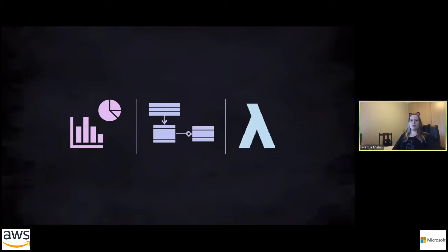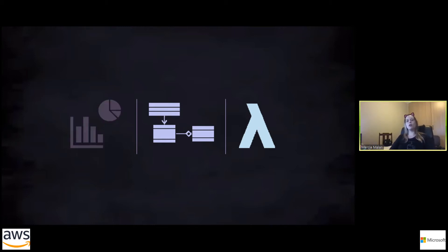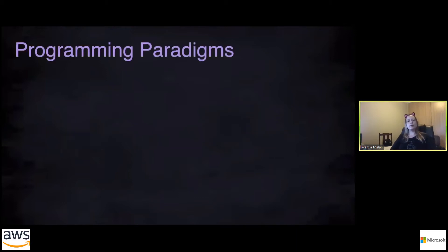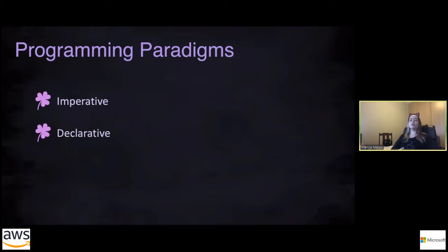So I've got BI on the left, object orientation in the middle, and functional programming on the right. Firstly, focusing on the two programming paradigms — these back-end development languages are typically categorized into imperative programming and declarative programming. I know these aren't the only paradigms, there are a hundred more, but for this we're sticking to these two.